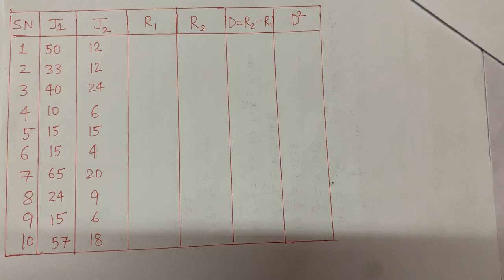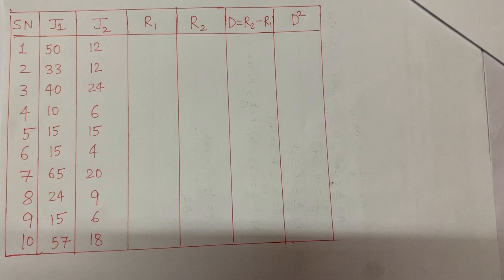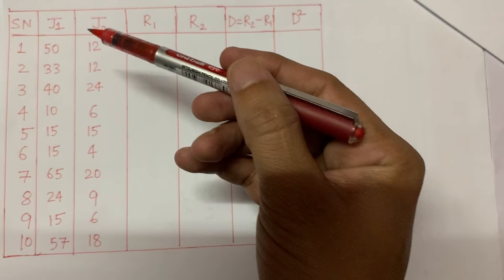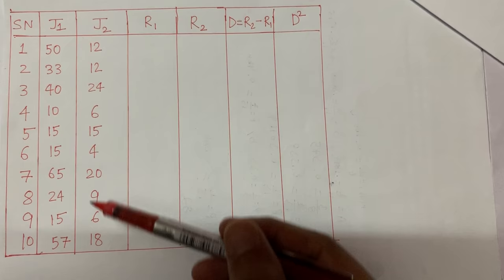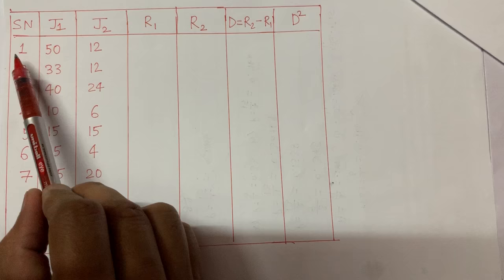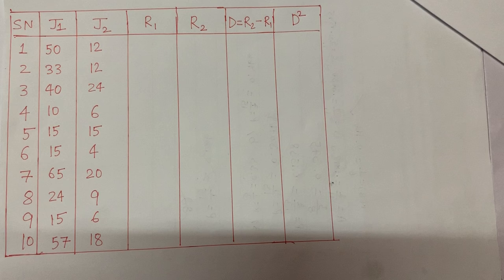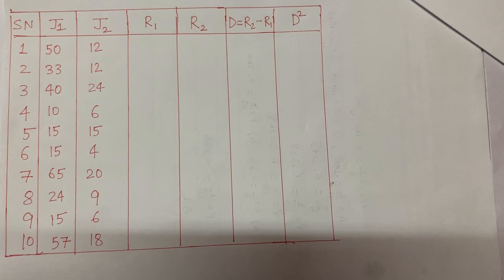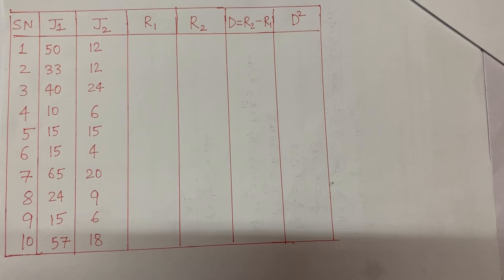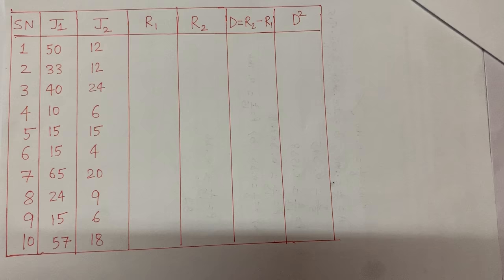Let's understand the problem first. Suppose there is a competition — it could be a dance competition or something — in which two judges are judging participants out of 100. Judge one is quite lenient in giving marks and judge two is a little conservative. There are 10 participants in total. For example, for the first participant, judge one gave 50 marks and judge two gave 12, and so on for each candidate.